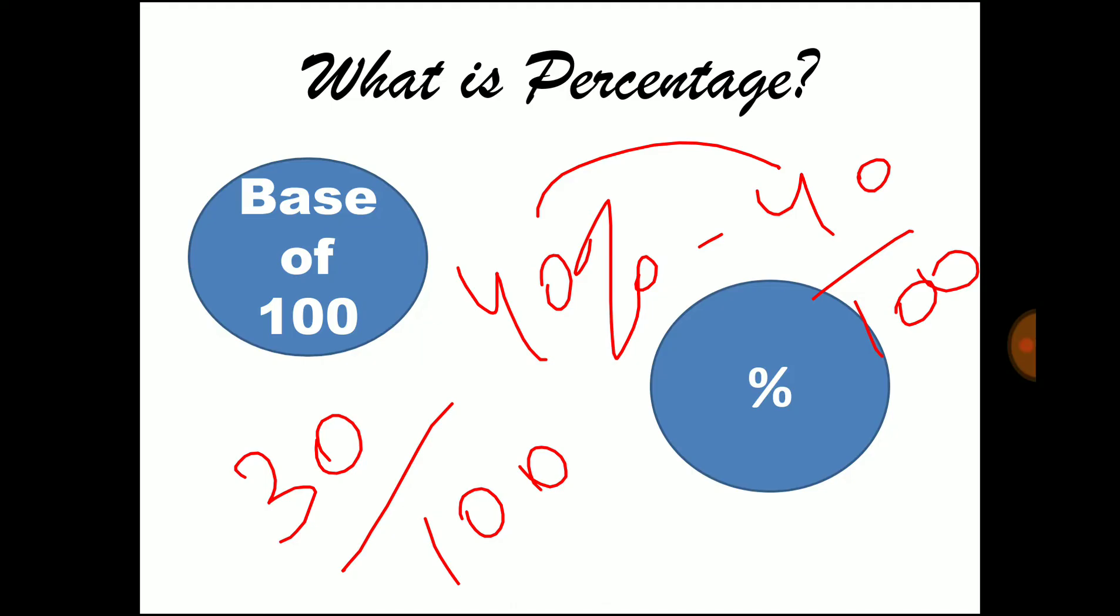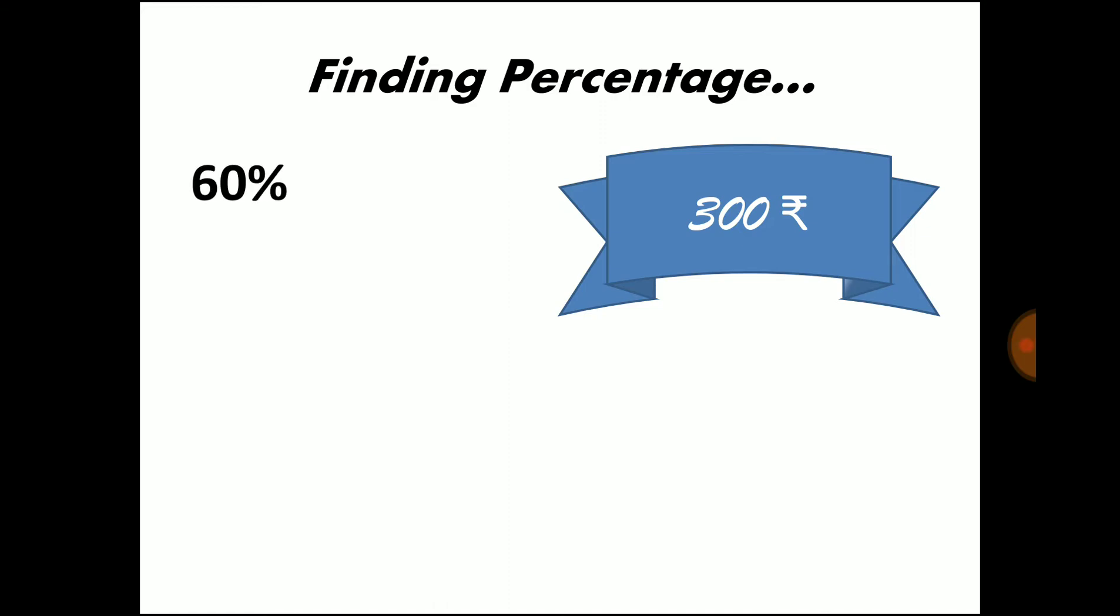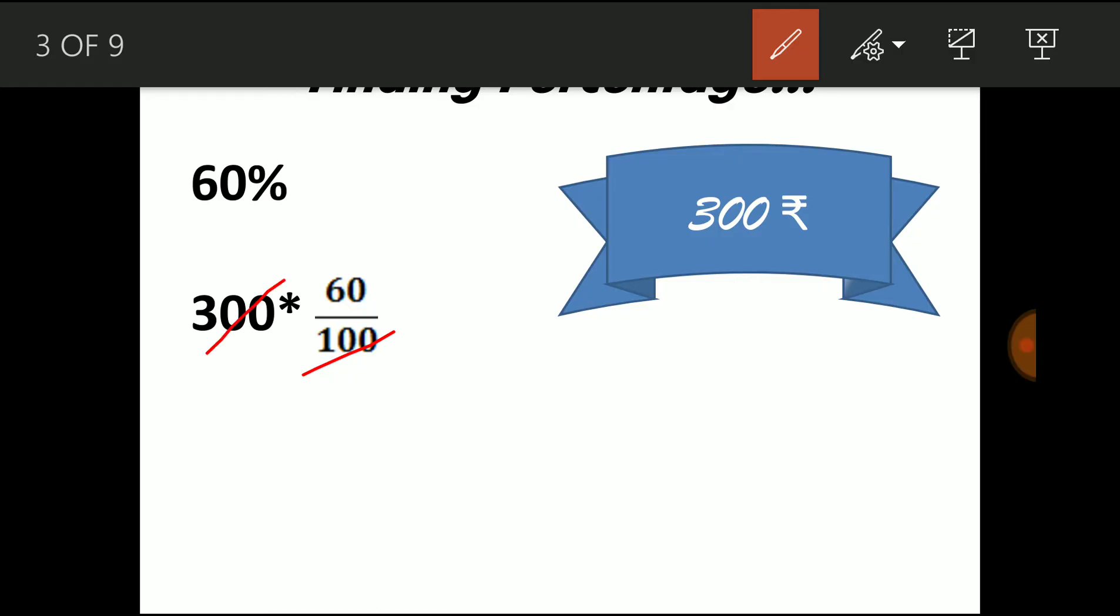So here I have some examples for you to make the percentage concept clear. Assume you have 300 rupees with you. So this 300 rupees is obviously 100% for you. Your friend is asking 60% of the amount which you are having. So we know 60% means 60 to the base of 100, 60 by 100. So you have to give 60% of the amount 300 which you are having. So you can write it as 300 into 60 by 100. So 300 into 60 by 100 gives you 180. So 60% of 300 means 180 rupees.